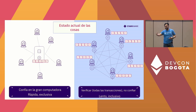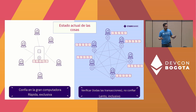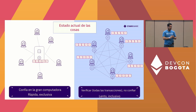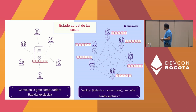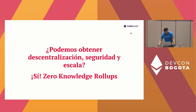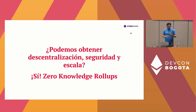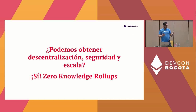Of course, this was a choice when we decided to create Ethereum — we wanted decentralization and security; scalability was sacrificed. But now we know better and can do better. So the question is: can we get decentralization, security, and also scaling? Yes, we can do it with zero knowledge proofs.